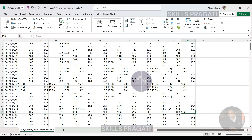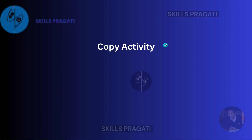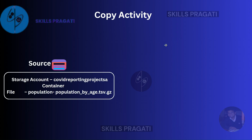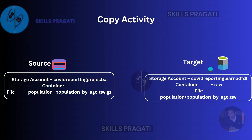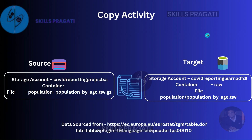Let's get back to the requirements. ADF can directly copy data from the Eurostat website, but in this lesson we want to learn about copying data from Azure Blob Storage. The population data will be in the Storage Account COVID Reporting Project, in the container 'population'. The target is the data lake storage account — COVID Reporting Learn ADFDL — and the file needs to be copied into the container 'raw' and the folder 'population'. The copied file will then have to be extracted to create the standard population .tsv file from the .gz file.